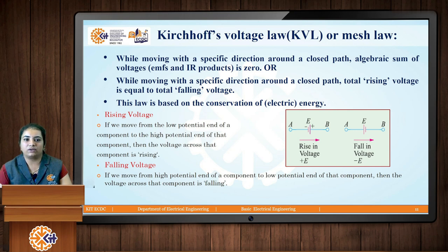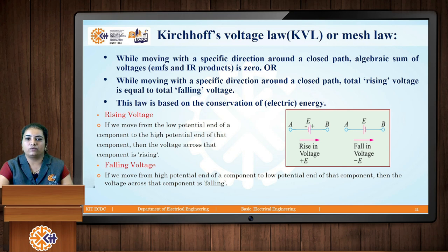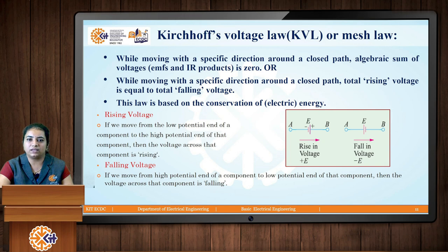Rising voltage and falling voltage are related to EMF and voltage drop. For EMF: if we are moving from point A to point B — from lower potential to higher potential — there is a rise in voltage, so that EMF source is treated as positive (+E). If we move from higher potential to lower potential, there is a falling voltage, so that EMF source is treated as negative (−E).